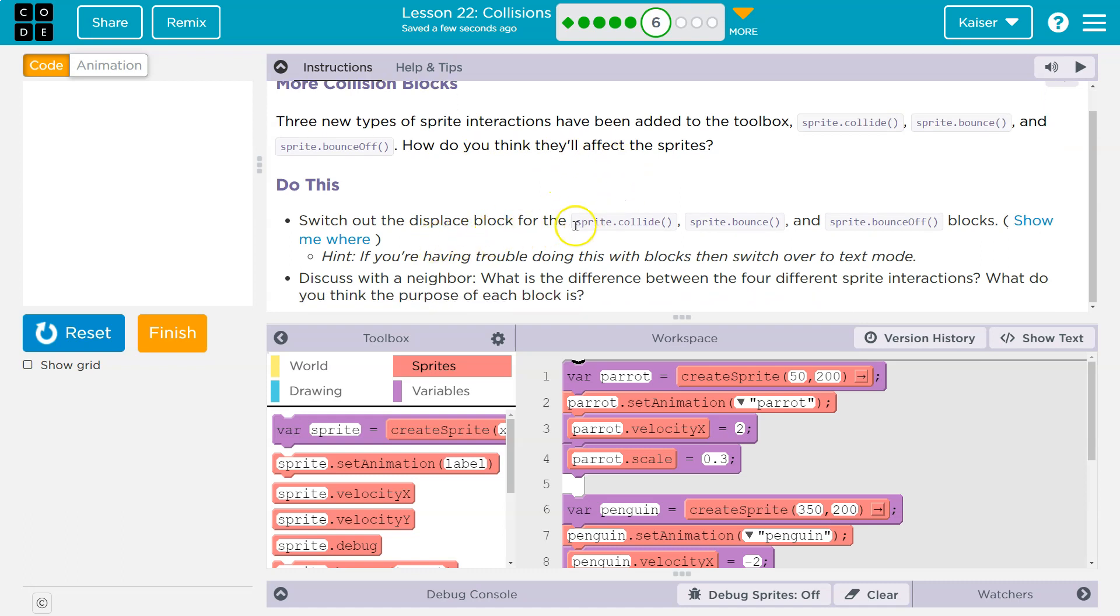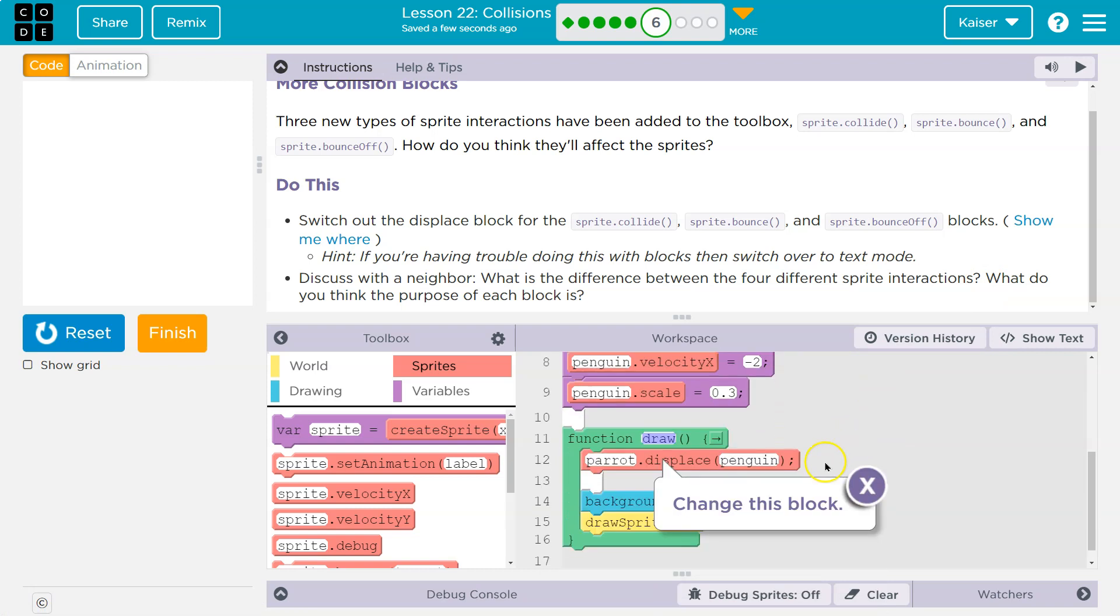Do this. Switch out the displace block for the sprite collide, bounce, and bounce off blocks. Show me where. And they'll actually point out, yep, here's our displace block. Hint, if you're having trouble doing this with blocks, you might switch over to text mode. So I'm going to get rid of displace. Goodbye, displace.